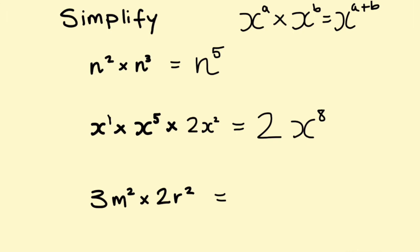I threw this last one in as a bit of a trick — what's different? I've got 3m squared times 2r squared. First look at the numbers: 3 times 2 is 6. Then look at the letters. To use these index laws, the base numbers need to be the same. Here I've got an m and an r, so I can't add those index numbers. So the answer is 6m squared r squared, always making sure your letters come in alphabetical order. Don't make the mistake of saying that's 6mr to the power of 4 — you need to have the same base numbers.